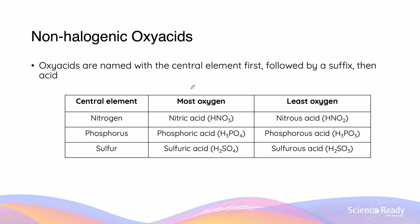Oxy acids are named with the central element first, followed by a suffix, then acid. For example, we have nitrogen which is the central element for this particular acid. For its possible structures, we have HNO3 and HNO2. For the acid which contains the most amount of oxygen possible, we give it the -ic suffix, so this is nitric acid.